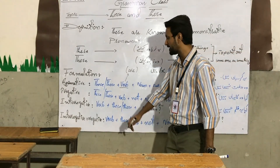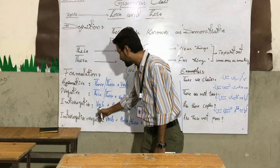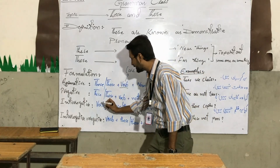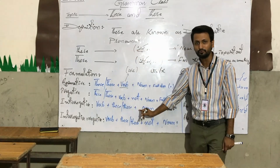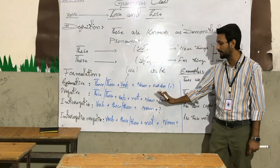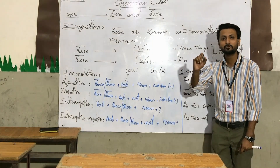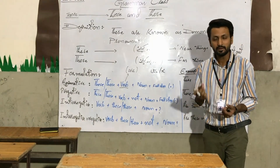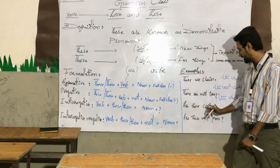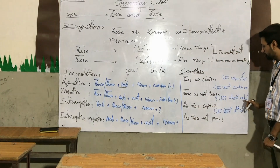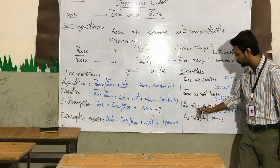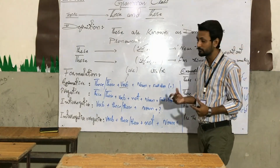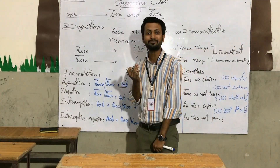Next is the interrogative sentence. An interrogative sentence is simple: you start with the verb 'are', then 'these' or 'those', then the noun, and end with a question mark — which is the punctuation part. The example is: 'Are those copies?'